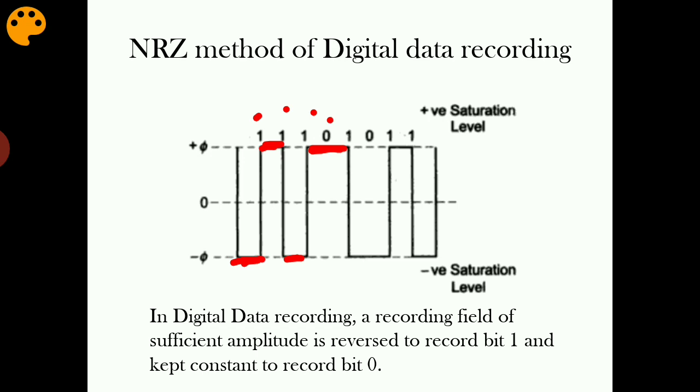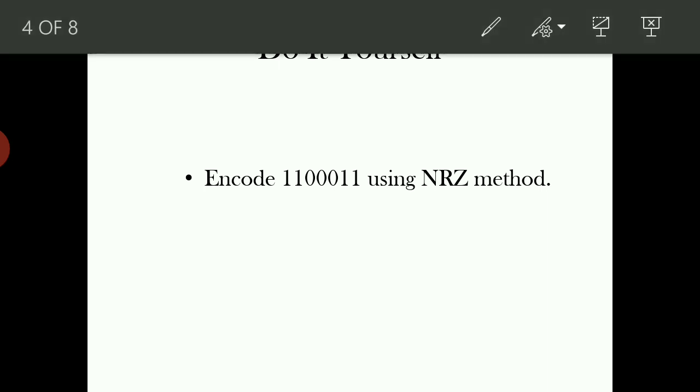Wherever bit one is to be encoded, there should be a reversal in flux direction. If we are recording using this method, the recording field of sufficient amplitude should be reversed to record bit one and should be kept constant to record bit zero. A reversal in flux corresponds to one and no change in flux corresponds to zero. This is the commonly used NRZ method for encoding.